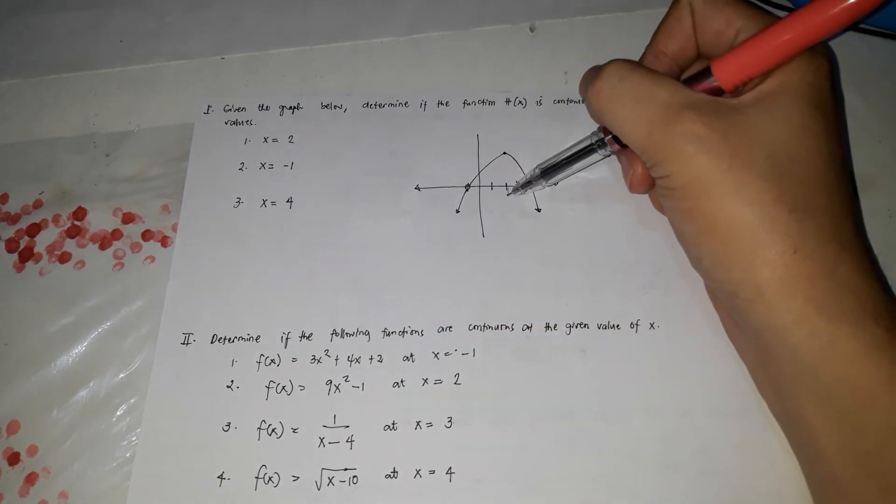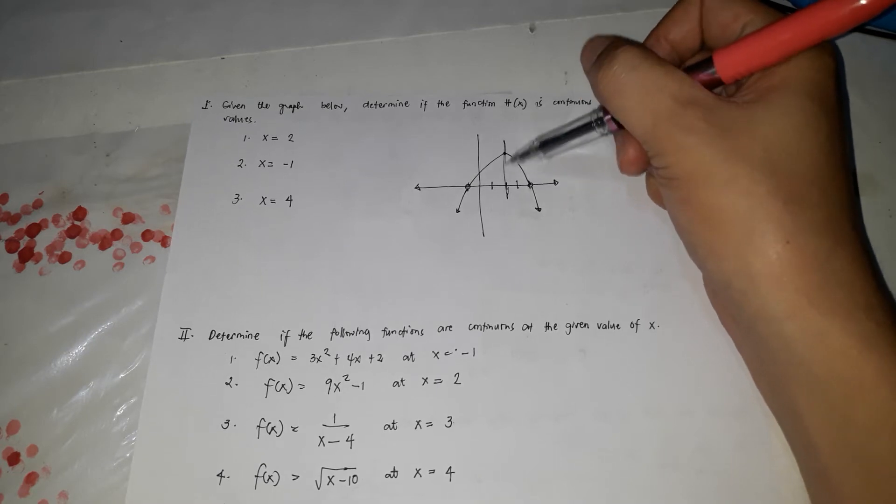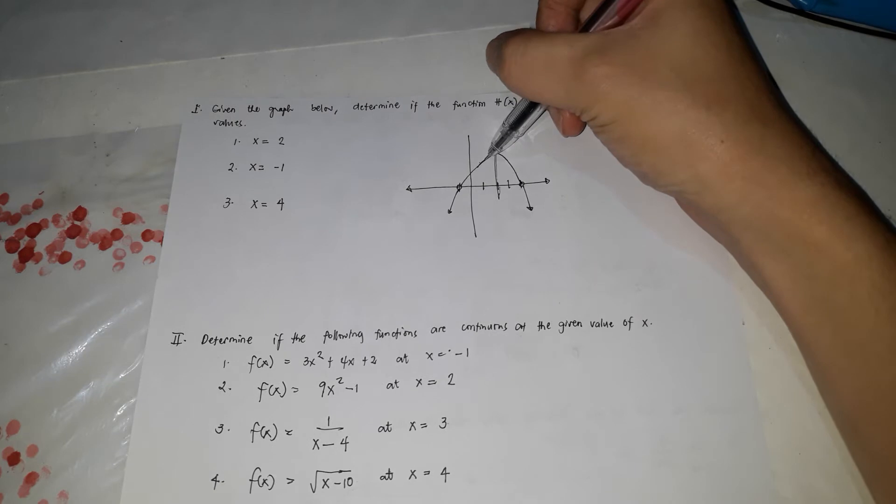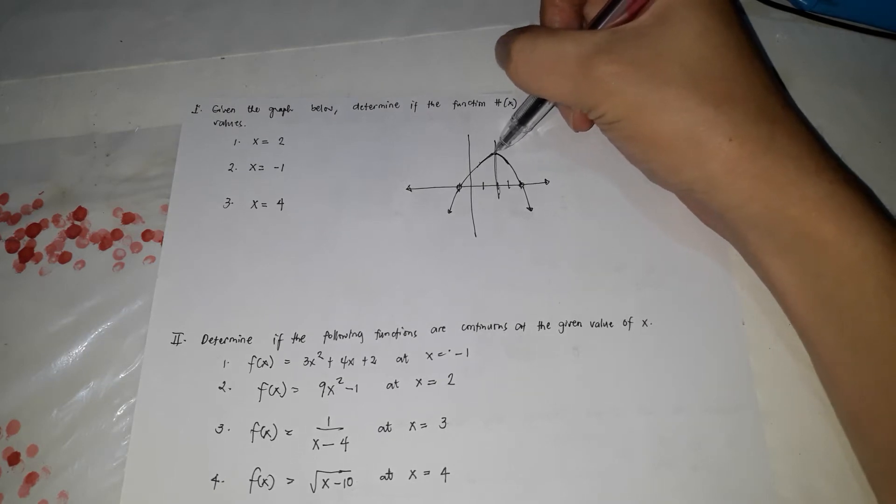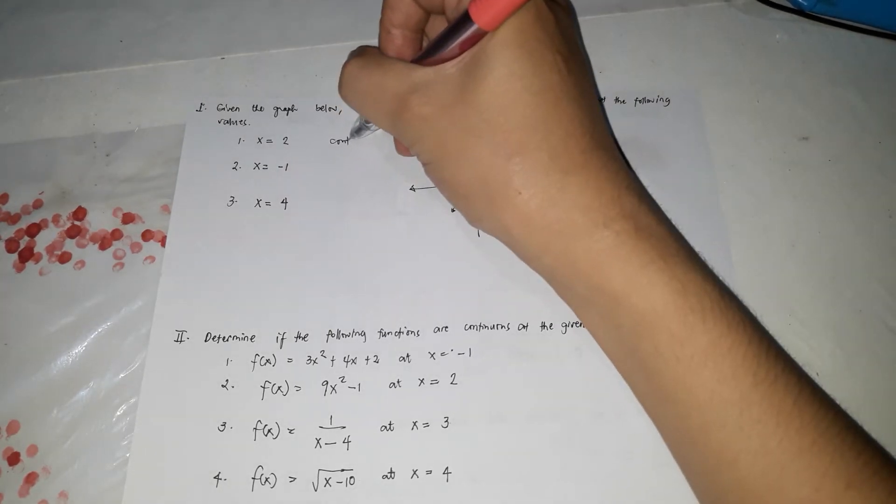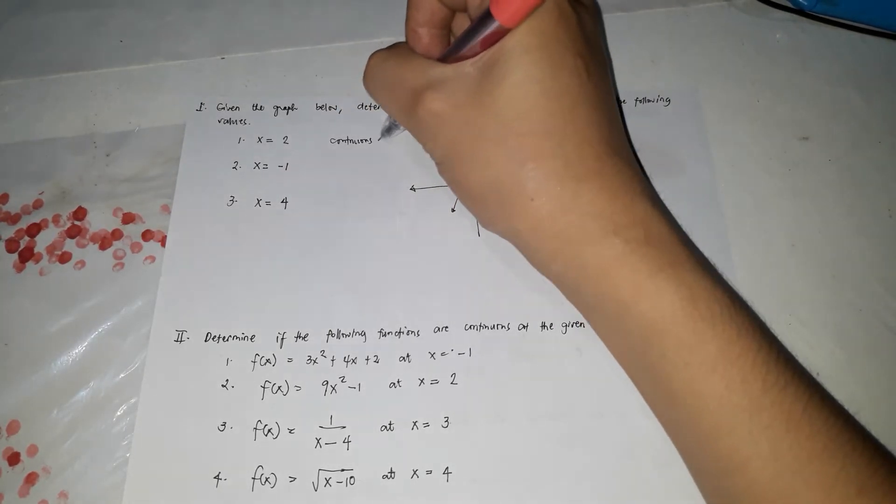We know that this is x is equals to 2. So, kapag i-trace mo ang graph, galing sa x equals to 2, hindi mo ili-lift ang ball pen. So, ibig sabihin, that's continuous, or checked.